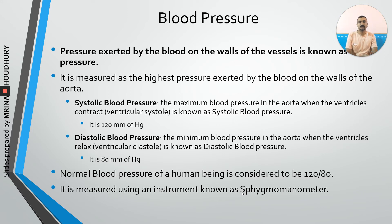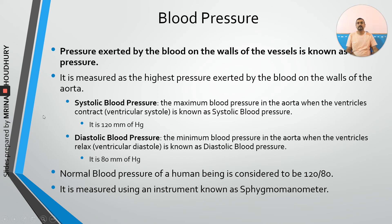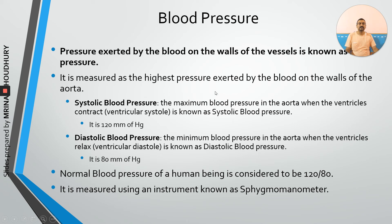Blood pressure is the pressure exerted by the blood on the walls of the blood vessels. Not all vessels have the same blood pressure; blood pressure is measured as the highest pressure exerted by blood on the walls of the aorta. The heart undergoes two processes: contraction and relaxation. When the ventricles contract — called ventricular systole — the pressure in the aorta is very high. When ventricles relax — called ventricular diastole — there is less blood pressure.